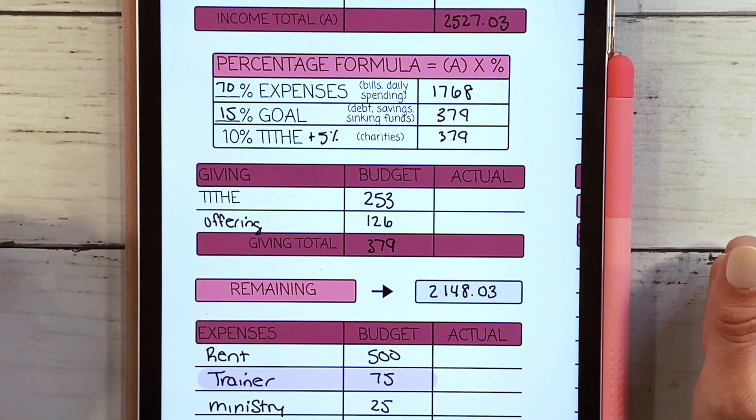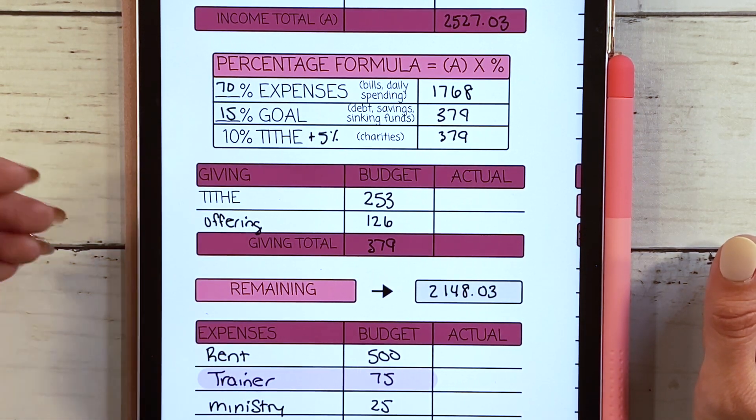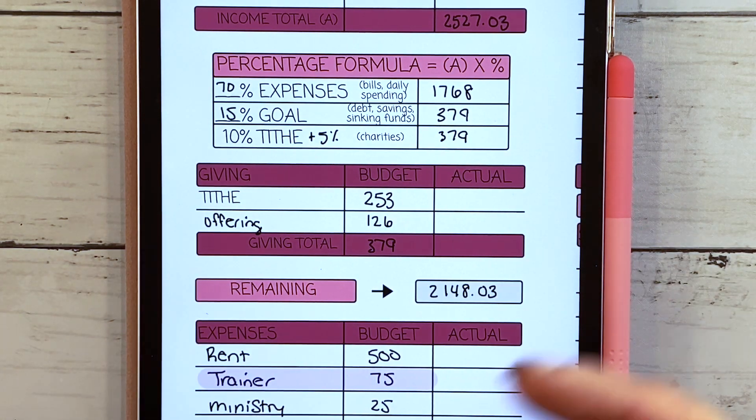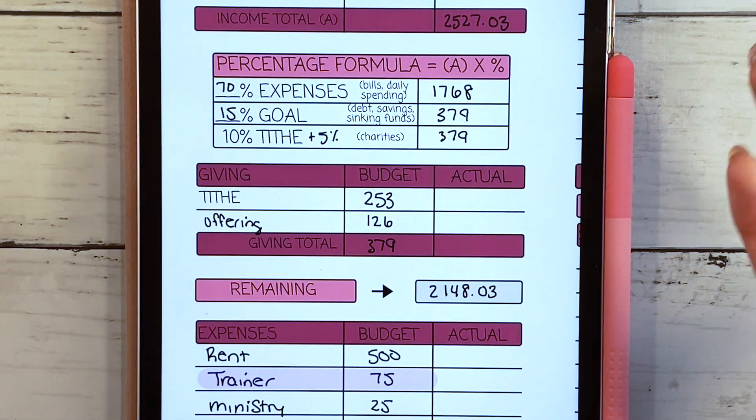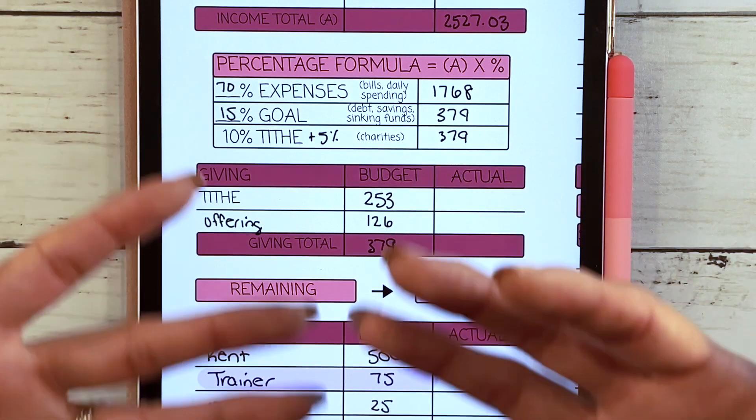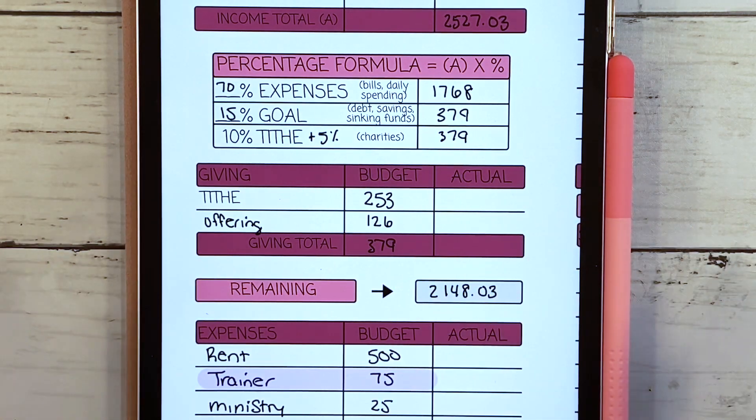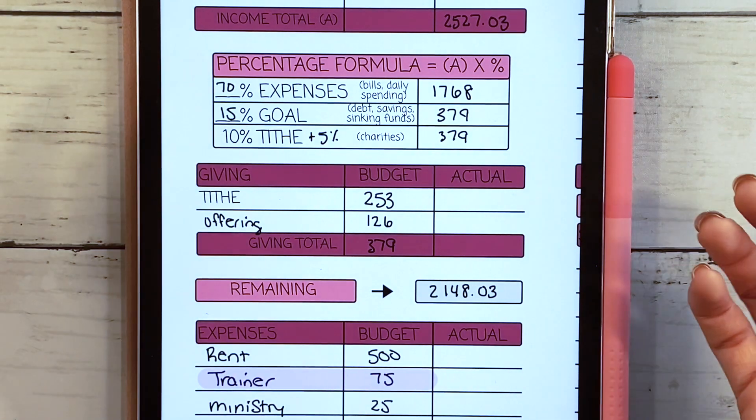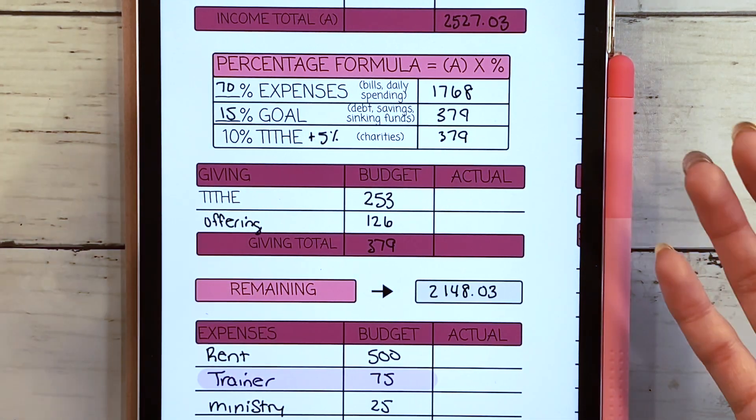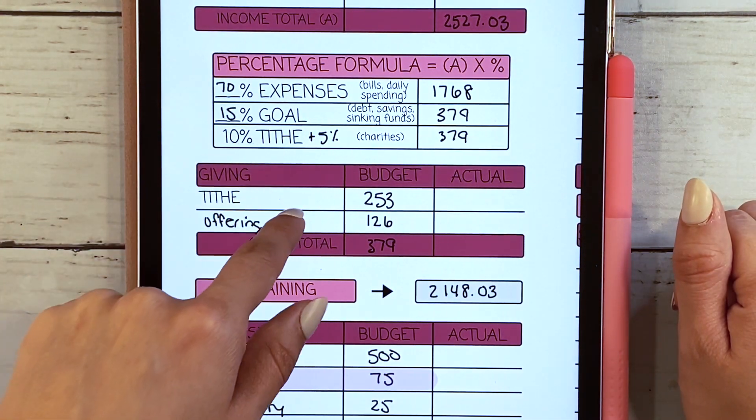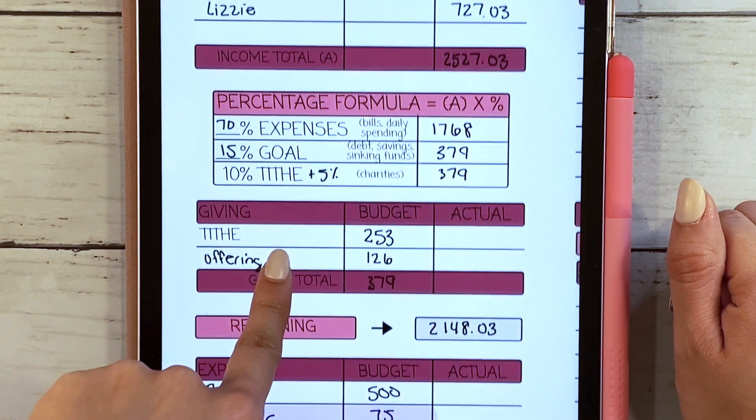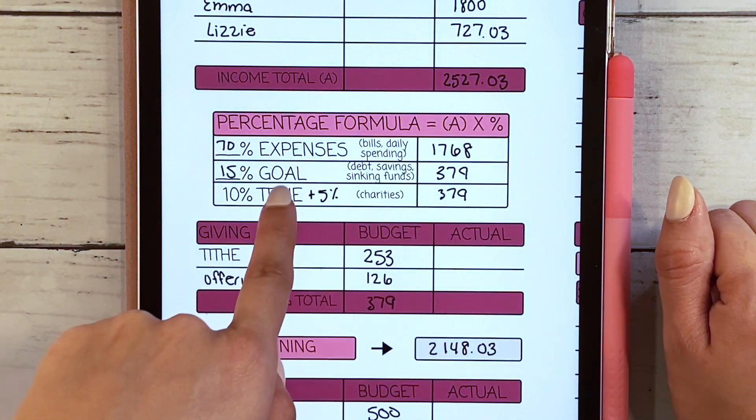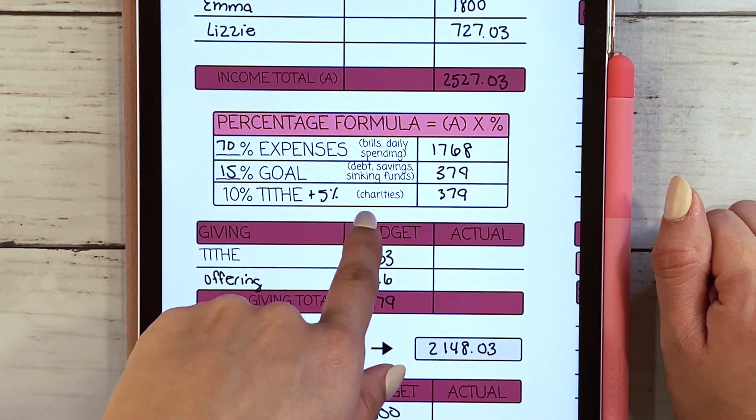This is something that we faithfully do and it has really blessed us so much in return. What we're doing is adding an additional percentage just for an offering above the tithe. We felt in our heart that for this season we want to give a little bit more for our community, so we're giving 5% more, essentially taking the income and multiplying it by 15%.